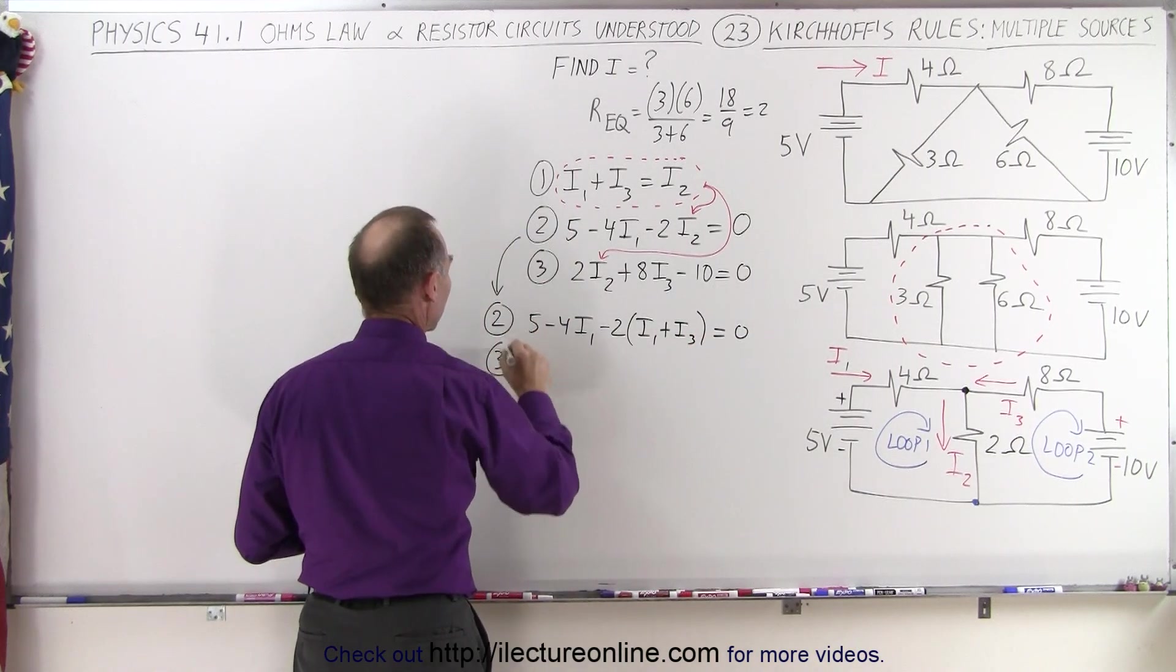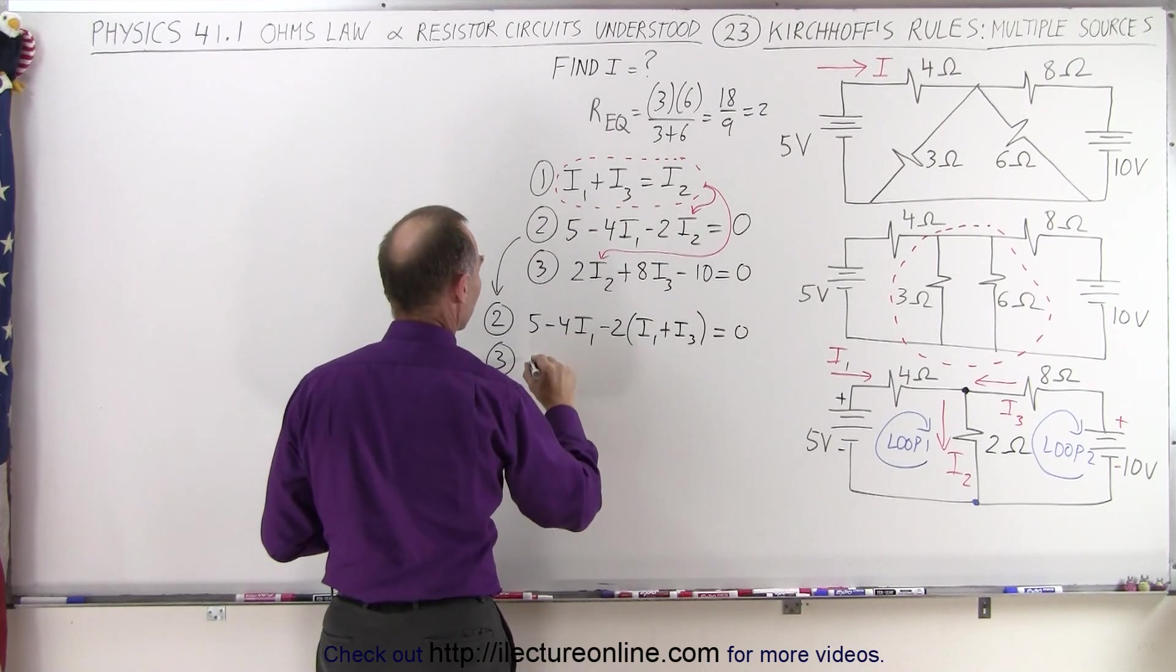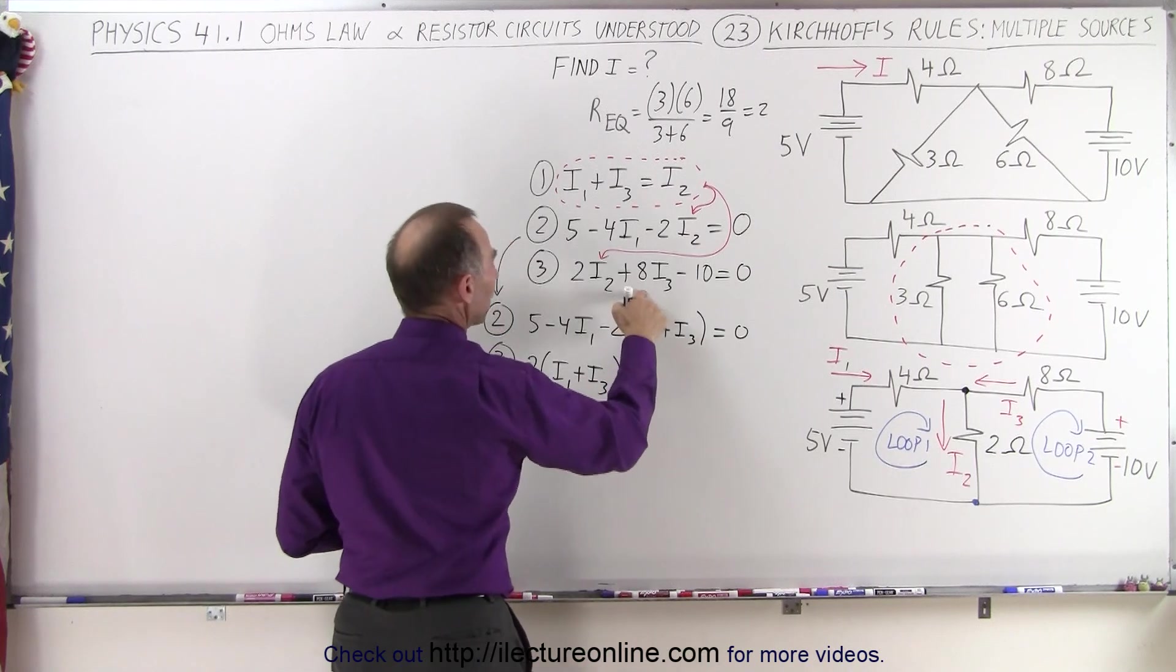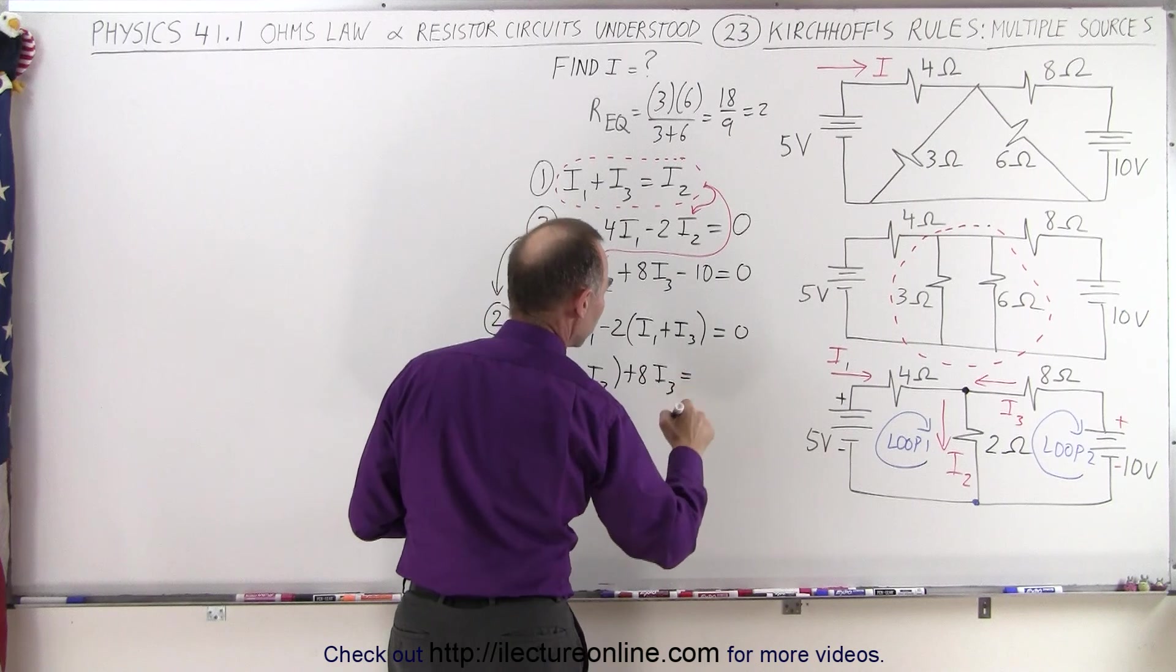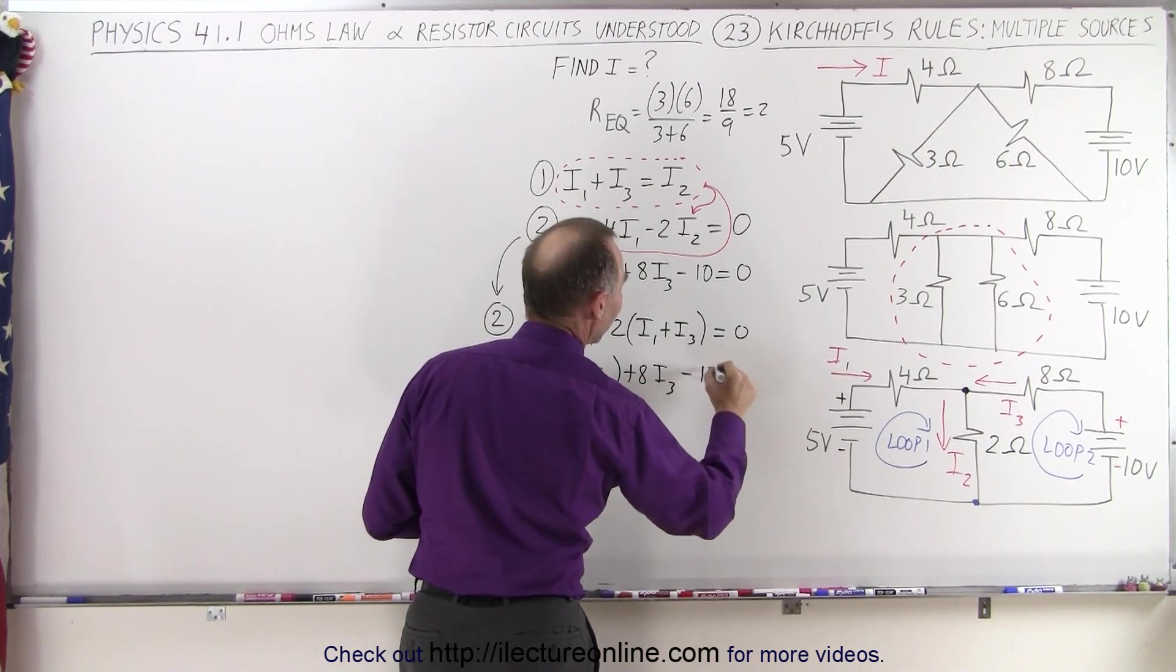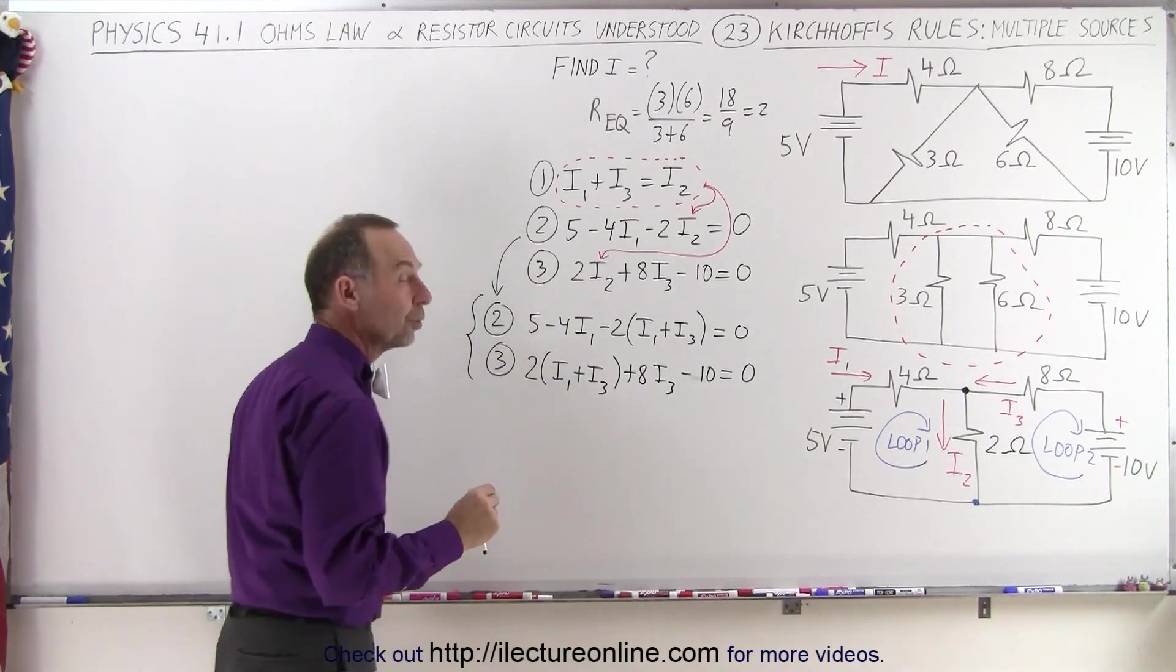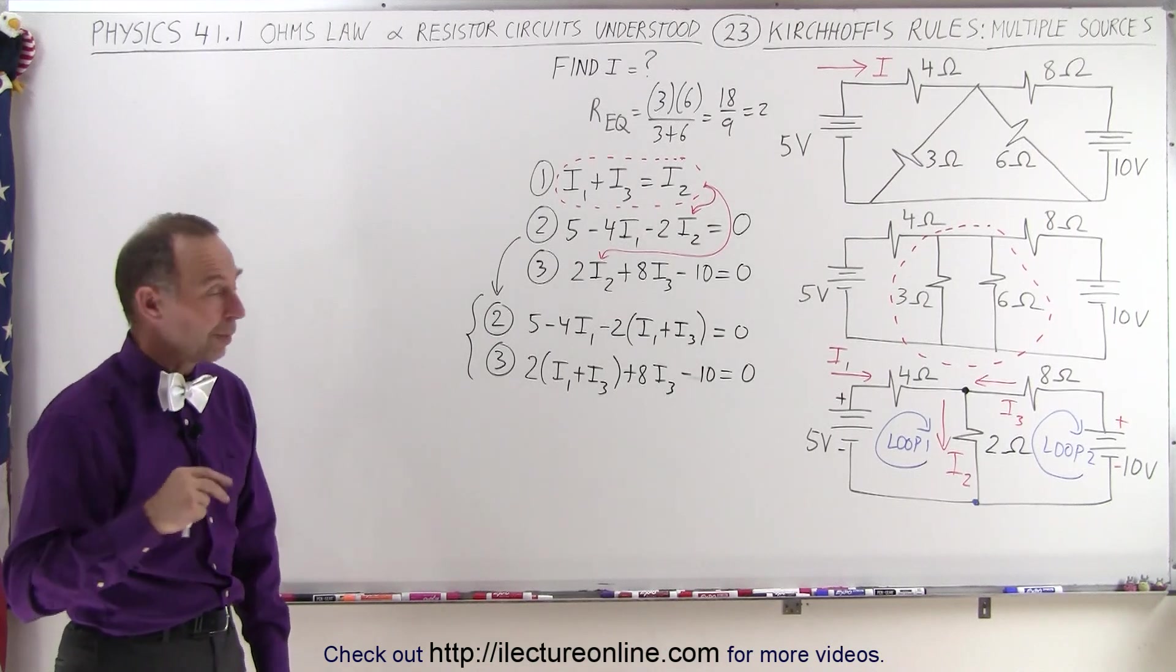For the third equation, again, we're going to replace I2 by what I2 is equal to. So we get two times I1 plus I3 plus 8 I3 is equal, oh, no, we're not ready yet. We're going to minus 10 is equal to zero. So now we have these two equations with only two unknowns in it, I1 and I3, and we're going to solve those simultaneously.